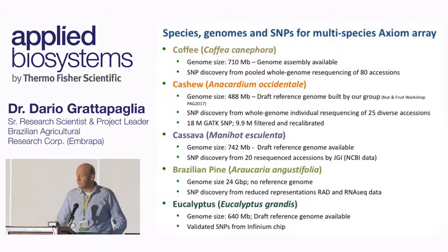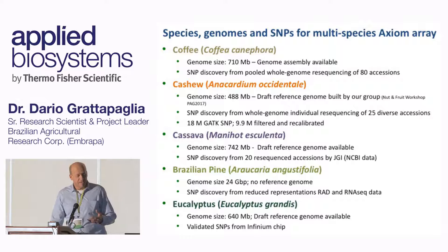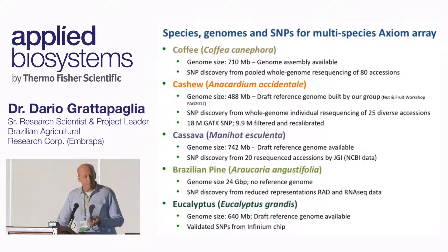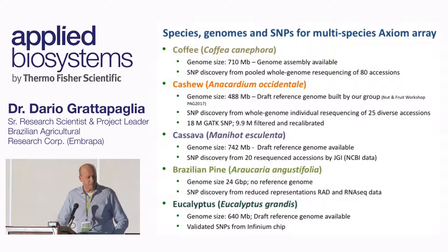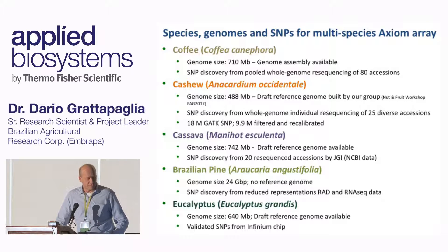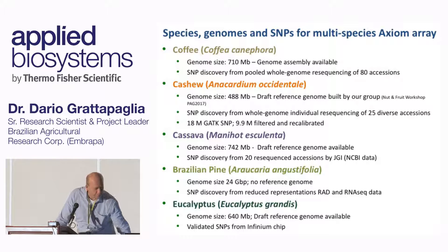We distributed 50,000 SNPs across these five species in amounts depending on how much money each project had. We had about 25,000 SNPs for coffee, about 16,000 for cashew, 4,000 for cassava, 3,000 for Brazilian pine, and 2,000 for eucalypts as a control.